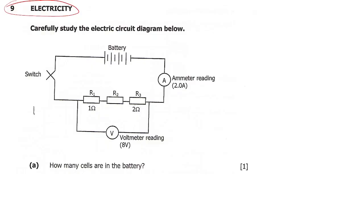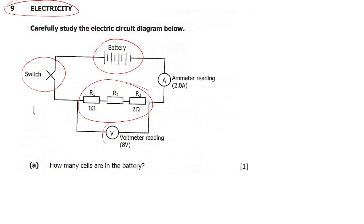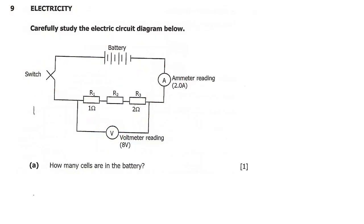The question says: carefully study the electric circuit diagram below. So let's study it. We have the battery here, then we have the switch, then we have the resistors here, then we have the voltmeter, and then we have the ammeter. They are asking: how many cells are in the battery?